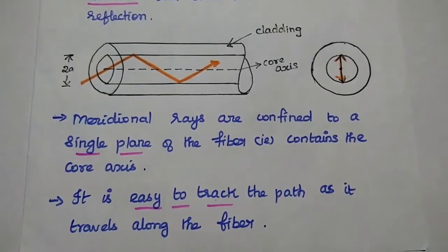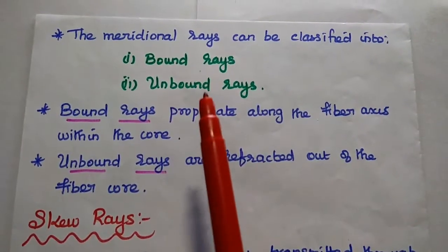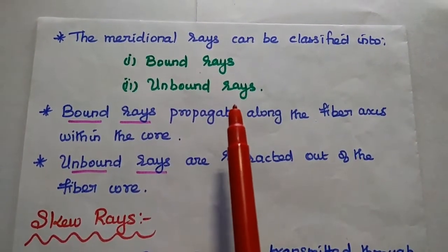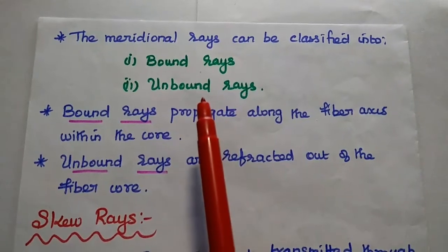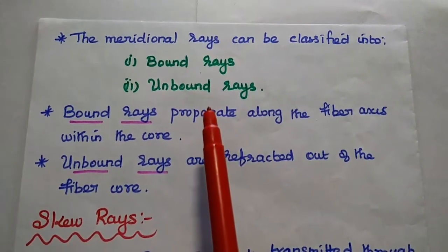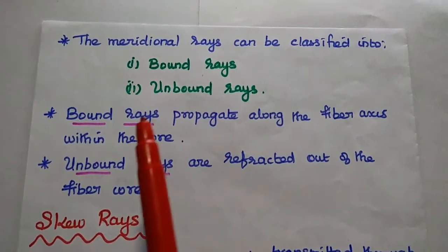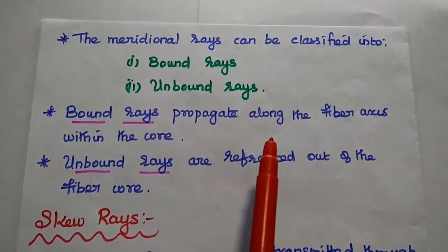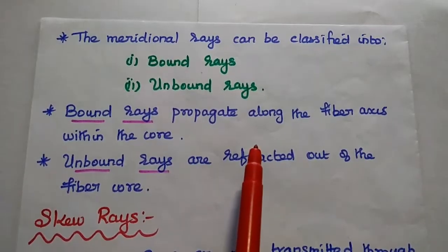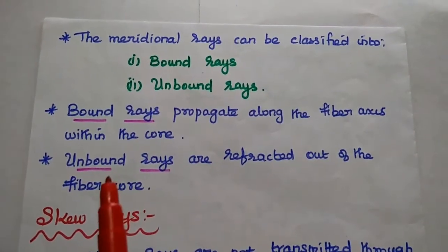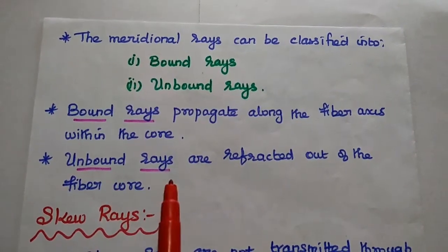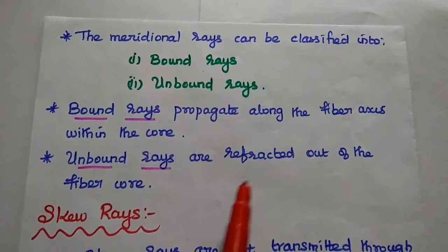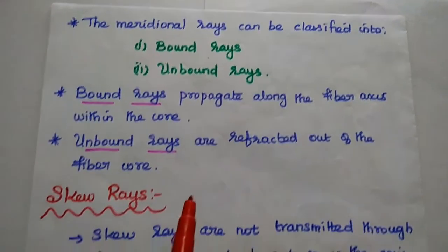Meridional rays can be classified into two types: bound rays and unbound rays. The bound rays propagate along the fiber axis within the core, but unbound rays are refracted out of the fiber core.